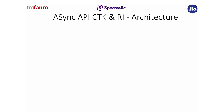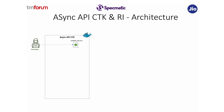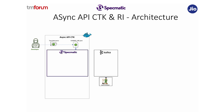Now let's switch gears and look at the architecture of the CTK and the RI. The CTK is the conformance toolkit and RI is the reference implementation. The CTK itself is dockerized, and the developer who is going to run it needs to update the change-me.json, which can be mounted into the CTK — this points to where your Kafka broker is running. They also update the payloads that the reference implementation understands and mount those into Docker. Specmatic itself is being used to power the CTK. Specmatic takes the payloads and validates them against the Async API specification.